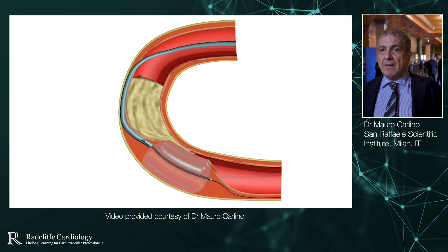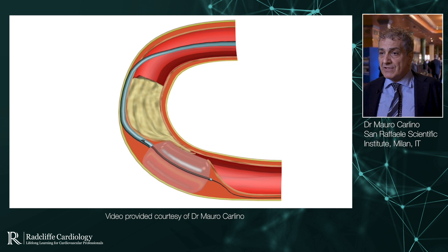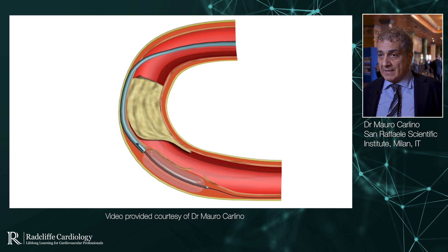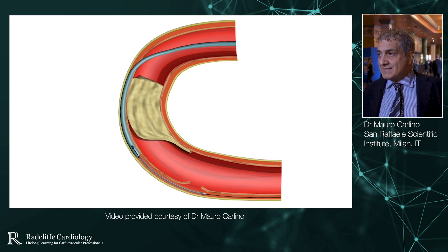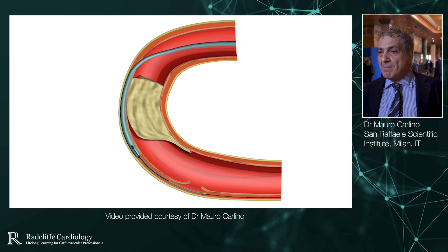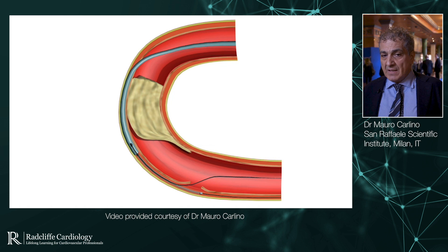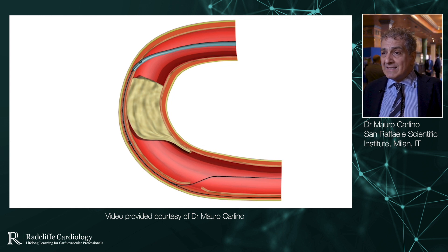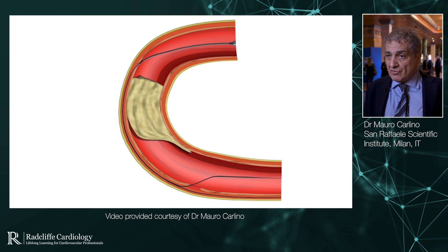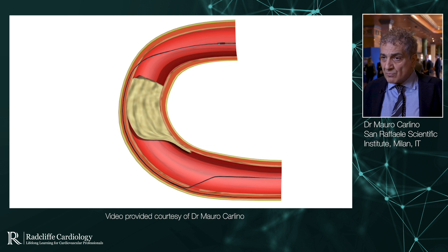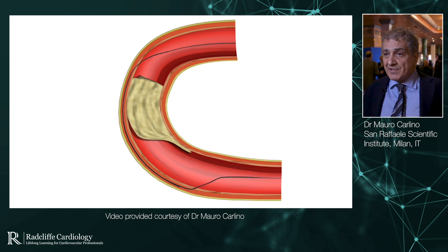We prepare a balloon mounted on a dual-lumen catheter. The over-the-wire system moves the balloon into the sub-intimal space. The monorail system is loaded with a wire ready to go immediately after the deflation of the balloon. With this wire, I am able to get into the true lumen before the fenestration collapses.